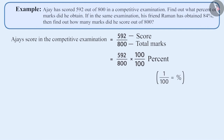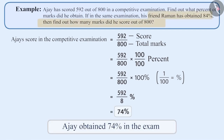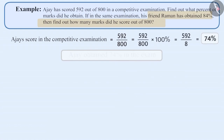So 592 by 800 equals 592 by 800 into 100 percent, which equals 592 by 8 percent, which is 74 percent. Hence Ajay has obtained 74 percent in the examination.